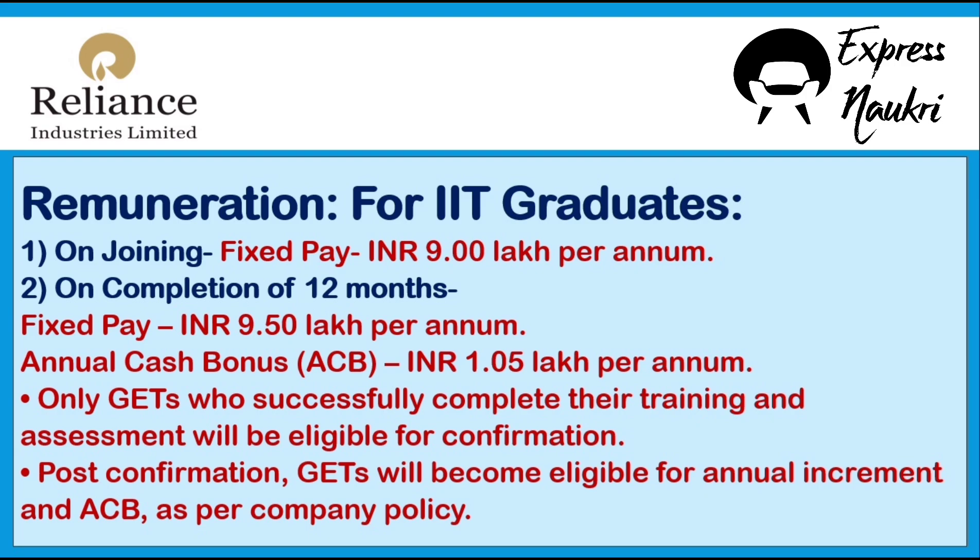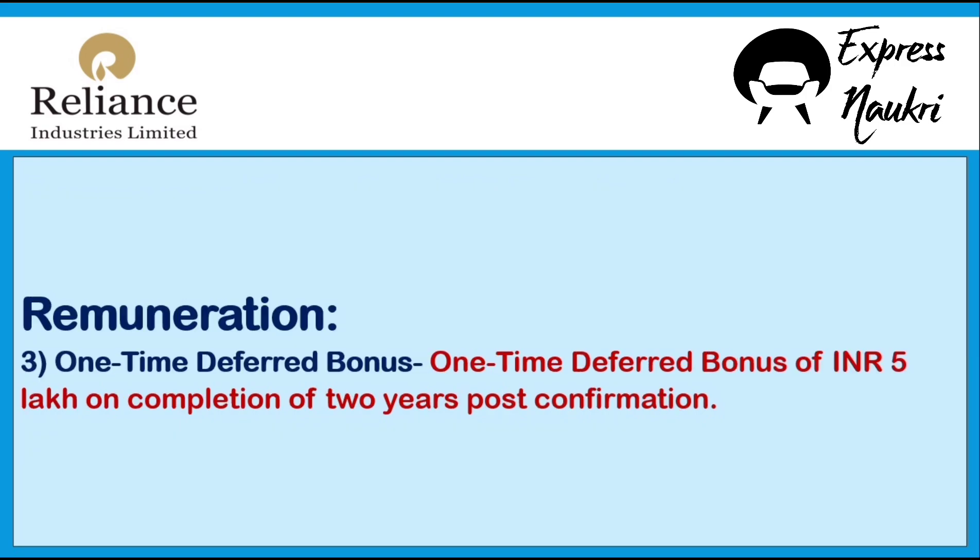Now remuneration — remuneration will be different for IIT and non-IIT students. For IIT graduates: 1. On joining, fixed pay will be 9 lakh Indian rupees per annum. 2. On completion of 12 months, fixed pay will be 9.5 lakh per annum, and annual cash bonus (ACB) will be 1.05 lakh per annum. Only GETs who successfully complete their training and assessment will be eligible for confirmation. Post-confirmation, GETs will become eligible for annual increment and ACB as per company policy. 3. One-time deferred bonus of 5 lakh Indian rupees on completion of 2 years post-confirmation.